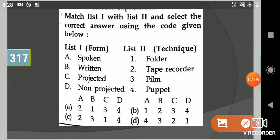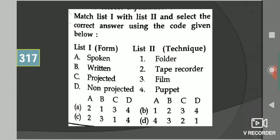Next question: Match list one with list two. In the first column you can see spoken, written, projected, non-projected. In the second column it is folder, tape recorder, film, puppet. Your answer will be: spoken is related to tape recorder, then written is related to folder, projected is related to film, and non-projected related to puppet. So your answer will be option number A.